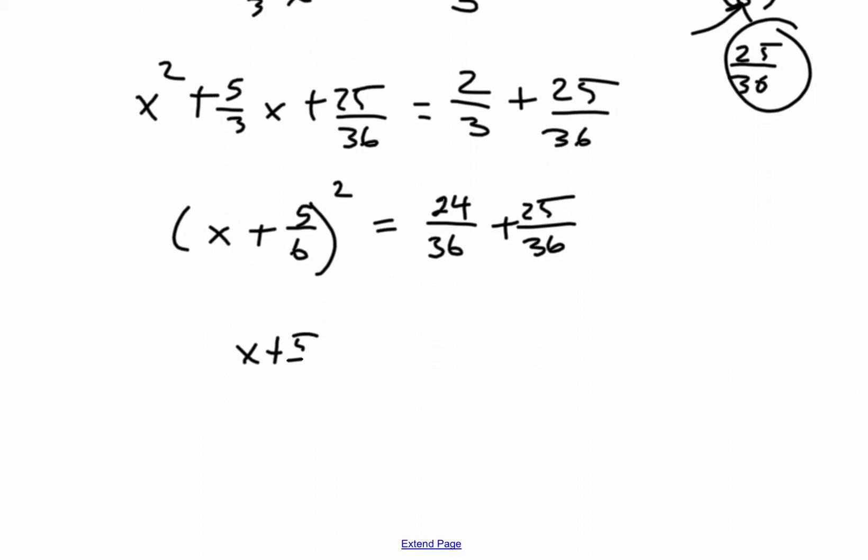So, I have x plus 5 sixths, all squared, is equal to, add those, 49 over 36.